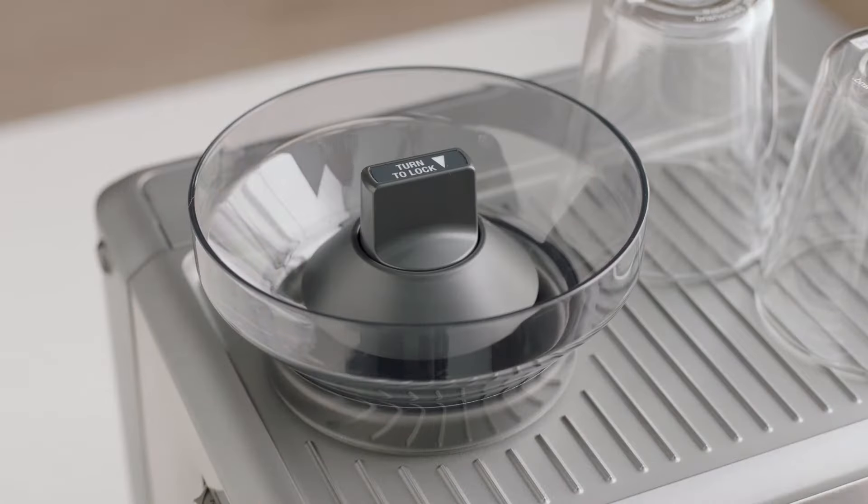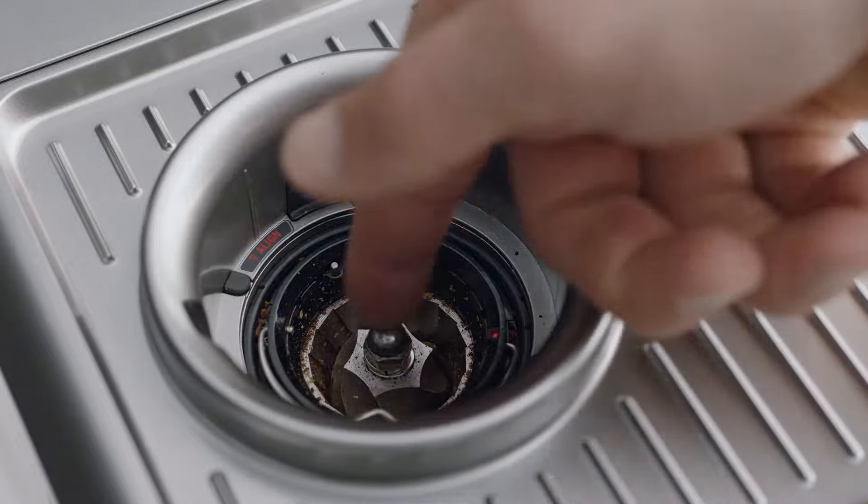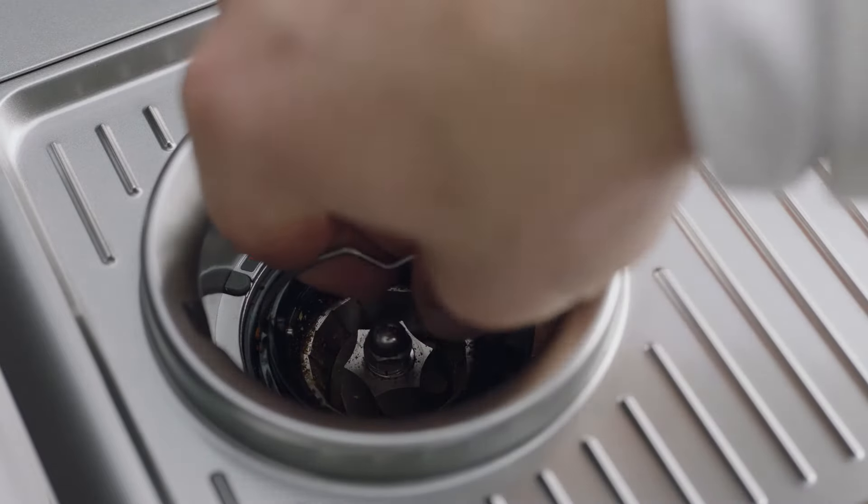Unlock and remove the upper burr by pulling the wire arm up and twisting counterclockwise.